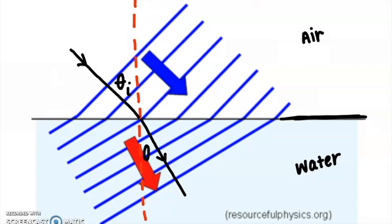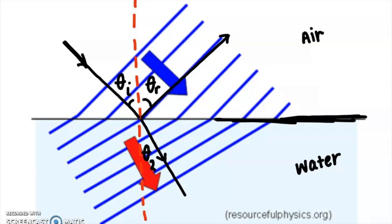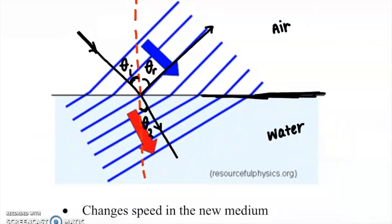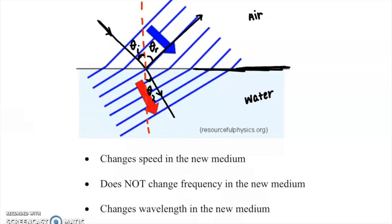The incidence angle is not equal to the refracted angle — that's the key difference from reflection, where the angle of reflection does equal the angle of incidence. When an incident ray hits the barrier between two different media, it gets refracted — bent — at an angle different from the incoming angle, and its speed changes in the new medium.